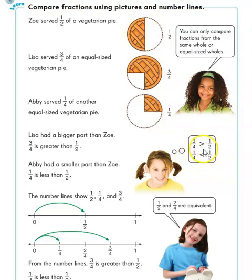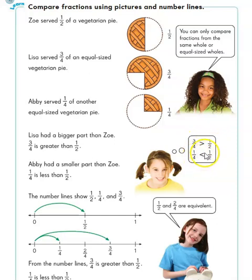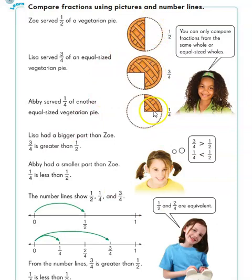The way we write that is with our greater-than and less-than symbols. Remember our alligators — they want to eat the bigger one. So: three-fourths is greater than one-half, and one-fourth is less than one-half. That's how we show comparisons.